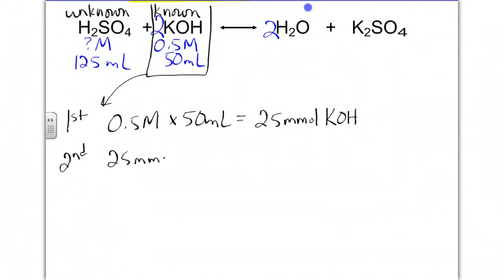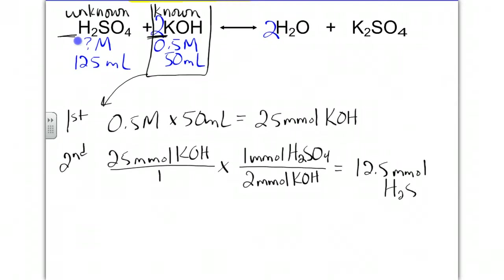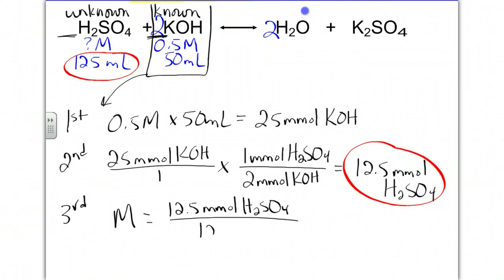Then we take our 25 millimoles of potassium hydroxide over 1 and stoic from potassium hydroxide to sulfuric acid. This time it's a 2-to-1 ratio, so we have 2 millimoles of potassium hydroxide to 1 millimole of sulfuric acid. Dividing 25 by 2 gives us 12.5 millimoles of sulfuric acid. Finally, molarity equals 12.5 millimoles of sulfuric acid divided by 125 milliliters, giving us 0.1 molar sulfuric acid.